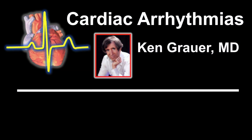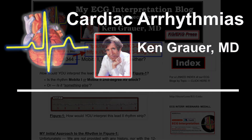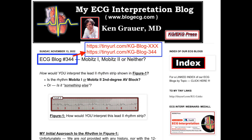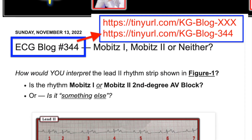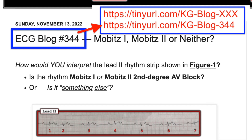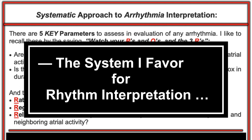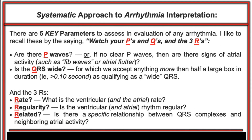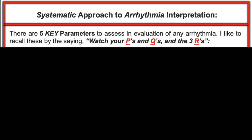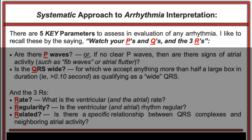Today we're using blog 344. All you do is substitute the blog number to have a user-friendly link to get you right there. All I want to mention from review of the past two sessions is my system for arrhythmia interpretation: watch your P's and Q's and the three R's — the five parameters you want to use for any arrhythmia.